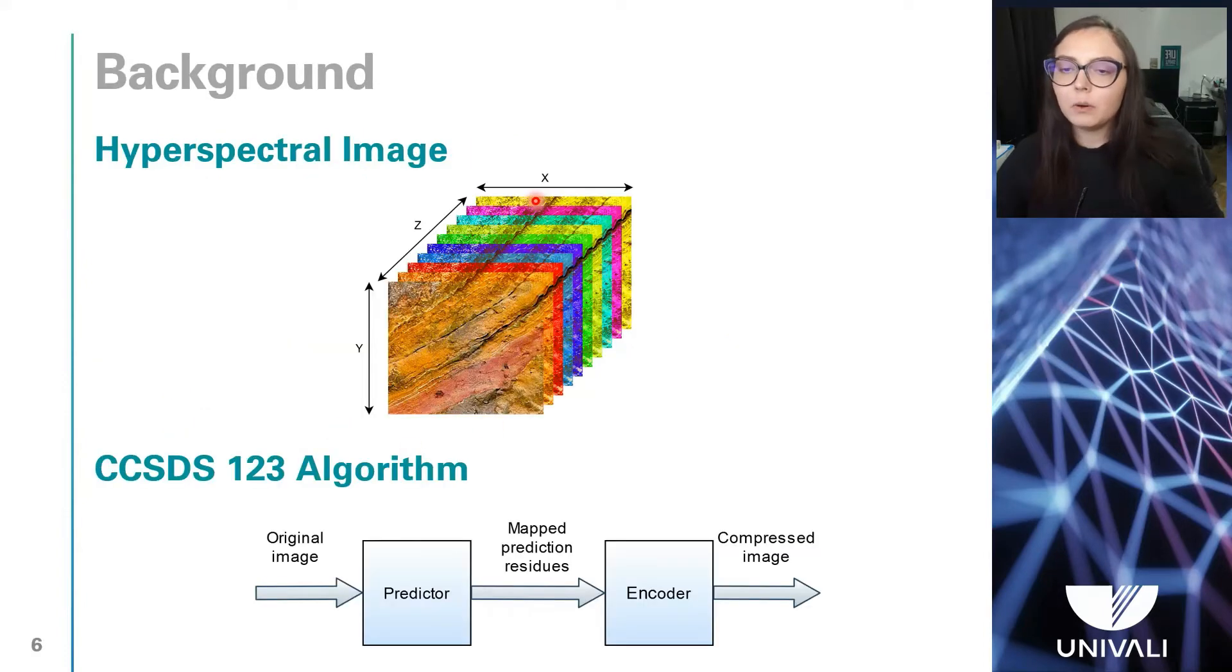This is an example of a hyperspectral image, and as you can see, it is a data cube that is composed of several 2D images at different wavelengths but referring to the same surface. And as I mentioned before, the main use of these images is remote sensing.